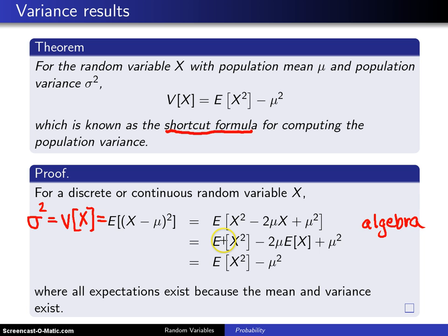Now, the next step uses the fact that the expected value operator is linear, and you can basically take this expected value and go across to each of these three pieces. So you'll have the expected value of X² minus the expected value of 2μX plus the expected value of μ².